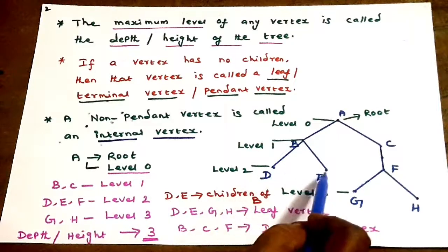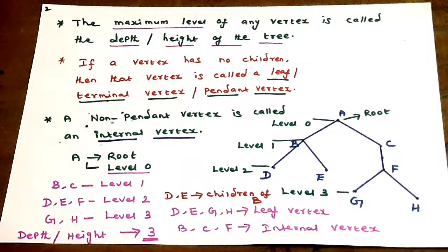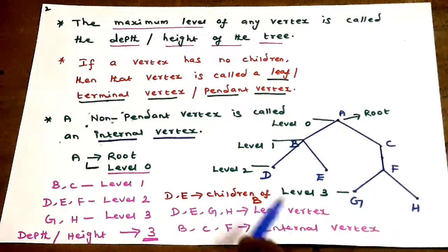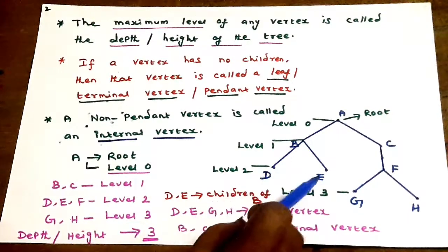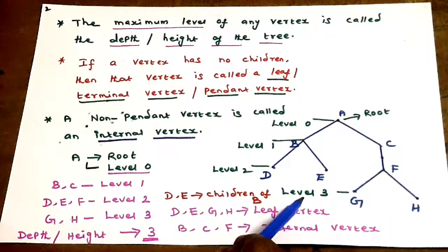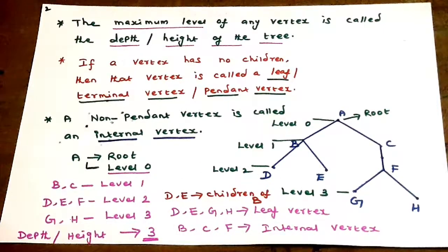The vertices D, E, G, and H are called leaf nodes. Why are they called leaf nodes? Because they have no children. The last-level vertices D, E, G, H — having no children — are called leaf vertices, terminal vertices, pendant vertices, or external vertices.